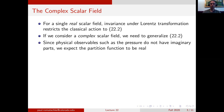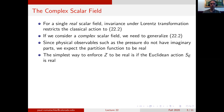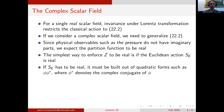We know that physical observables such as the pressure do not in general have imaginary parts, so we expect the partition function to be real as well. If the partition function is expected to be real, the simplest way to enforce this is to say that the action SE has to be real as well. If the action SE has to be real, it must be built out of quadratic forms such as phi times phi star, where phi star denotes the complex conjugation of phi.